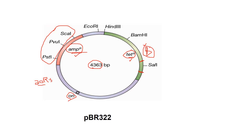If a foreign DNA molecule is inserted into the tetracycline gene, the tetracycline resistance property will be lost, meaning the bacteria with the recombinant plasmid will no longer resist the antibiotic tetracycline.